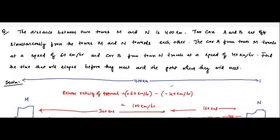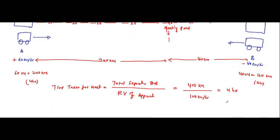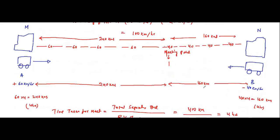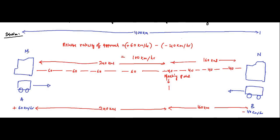To answer the question: the time that will elapse before they meet each other is 4 hours, and the point where they will meet is 160 kilometers from town N, or equivalently 240 kilometers to the right of town M. Either way, both answers are correct.